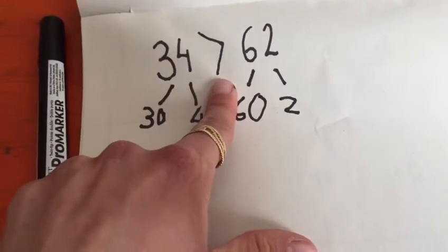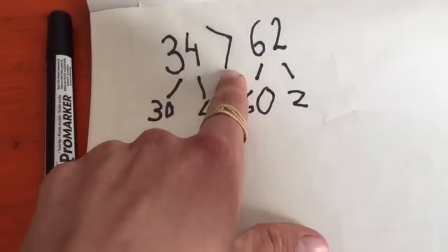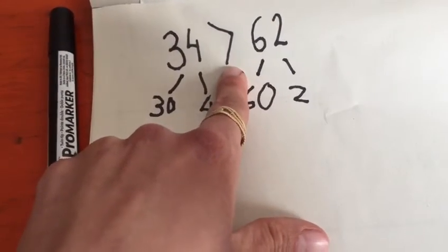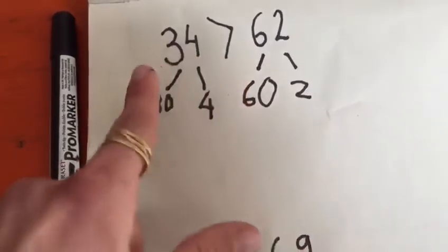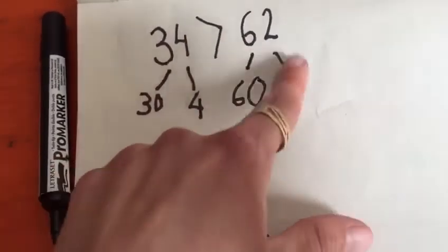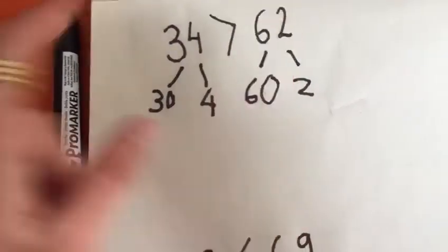Remember our crocodile mouth always faces the bigger number. Our greater than sign always faces the bigger number. So I can see this is showing me 34 is bigger than 62 which I know is not right.